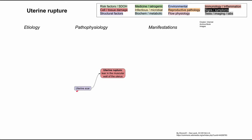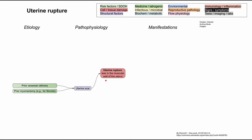A uterine rupture is most likely to happen where you've had a uterine scar, because that point in the uterus is weaker than the surrounding uterine muscle. Why would you get a uterine scar? It's usually in the case of a prior cesarean delivery or a prior myomectomy — a procedure where you cut away a part of the uterine muscle, normally done for fibroids, which are large painful growths on the uterus. So if the mom has had fibroids and a myomectomy, that leaves a uterine scar predisposing her to uterine rupture, as does a prior cesarean delivery.